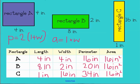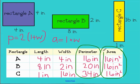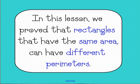All right, so we have answered our question. Our rectangles all have an area of 16 inches squared, which is the same for each rectangle, but their perimeters are all different. So we have proved that rectangles that have the same area can have different perimeters.